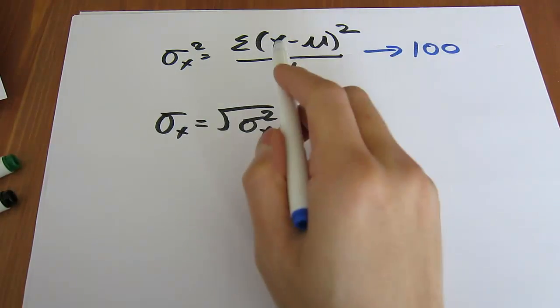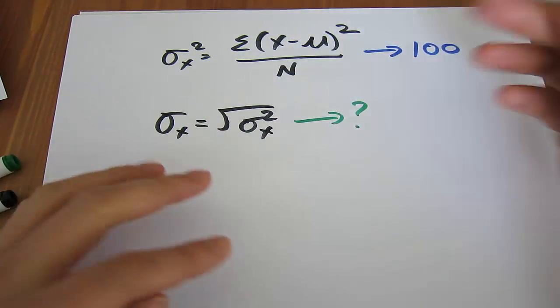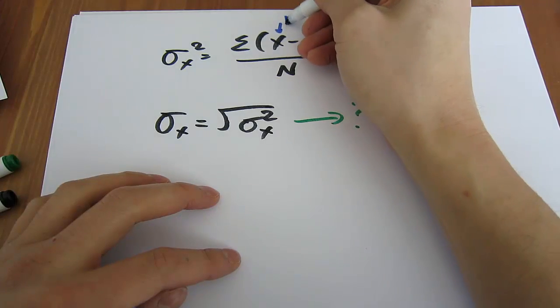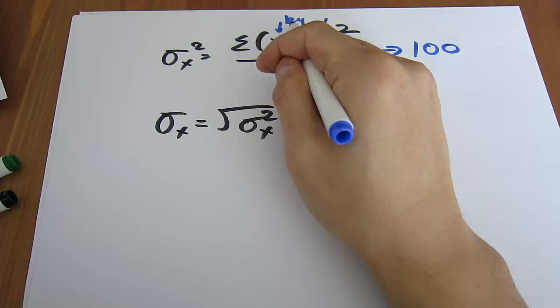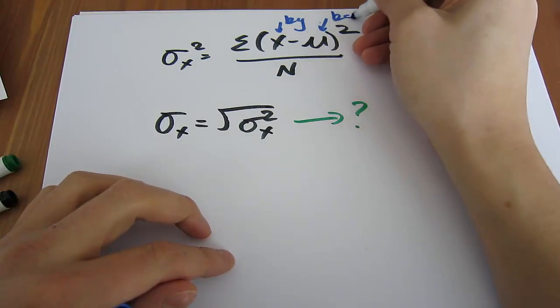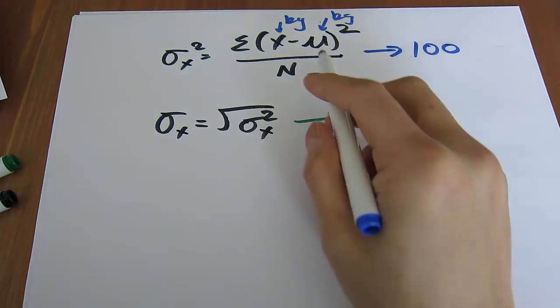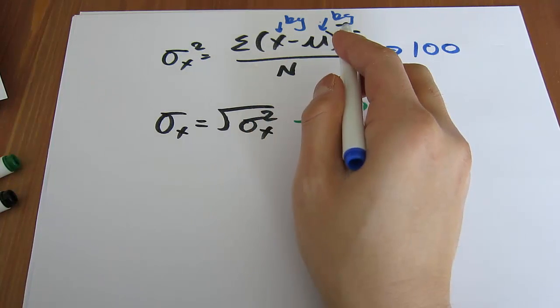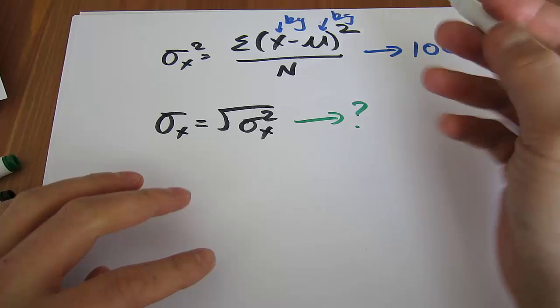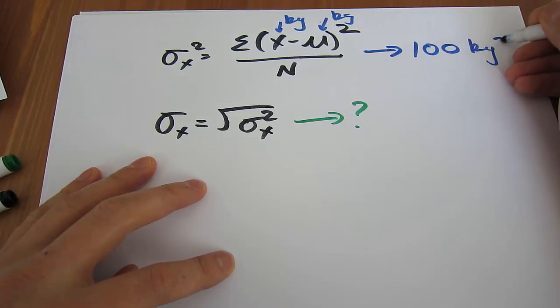Now, if you look here, if we're talking about students' weights, everything here is in kilograms, right? An individual student's weight is measured in kilograms, and the average weight is also measured in kilograms. So we're dealing with kilograms here in the numerator, but then we square it. Because we square it, the units here is kilograms squared.